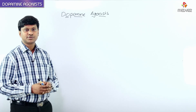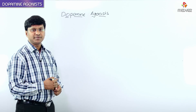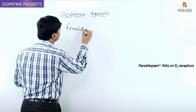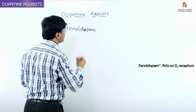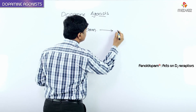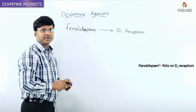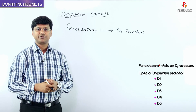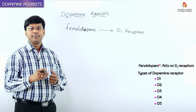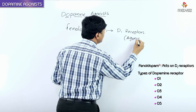Let me discuss the next group of antihypertensives — the dopamine agonists. We have one particular antihypertensive called fenoldopam. This fenoldopam acts on D1 receptors. We have five types of dopamine receptors: D1, D2, D3, D4, and D5, but fenoldopam specifically acts on and is an agonist of the D1 receptor.